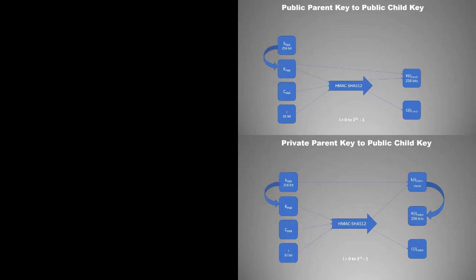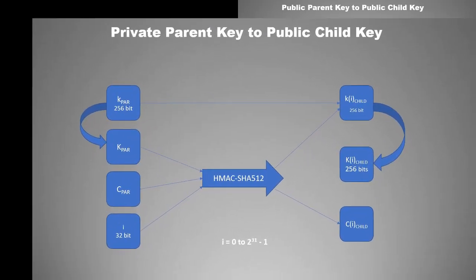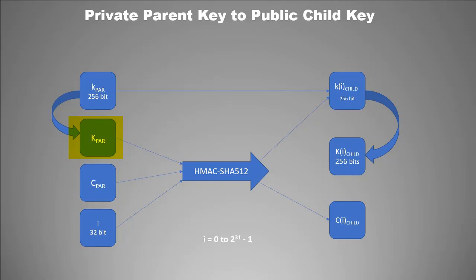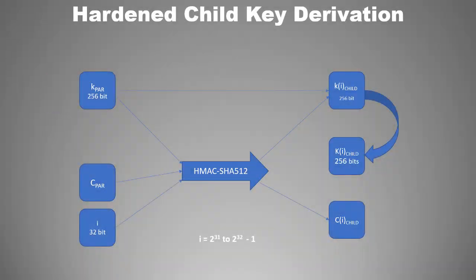Here's why: if someone has the extended public parent key, they can generate the hash. They know this hash was added to the private parent key to produce the private child key. So knowing the private child key and the hash, they can subtract to get the private parent key. That said, this type of hacking is very difficult because private keys are not stored on the web server, and that is why normal key derivation is considered extremely secure. But to handle this rare scenario, some precautionary measures are taken — and that is where hardened child keys come into play.